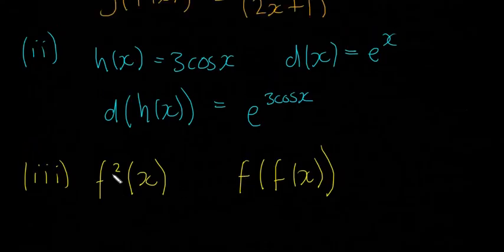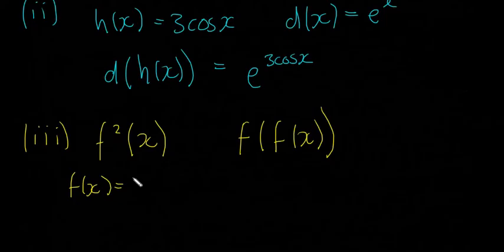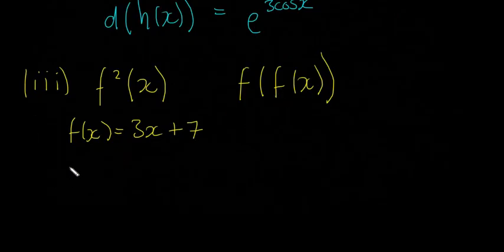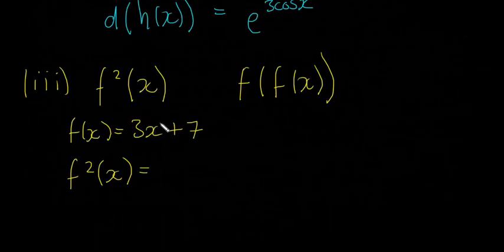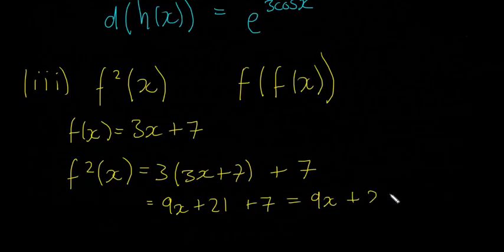It's no different than any of the other ones. Our f of x is equal to 3x plus 7. So if we want to put f of x inside of that, f squared of x is going to be wherever we did see x, so there's an x here, we're going to put the function inside of it. It's actually going to be 3 times, instead of x we're going to have another f of x, so 3x plus 7, and that's going to be all plus 7. We'll just multiply that one out: 9x plus 21 plus 7, final answer is 9x plus 28.